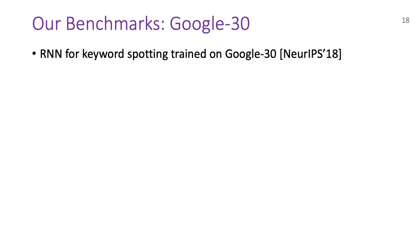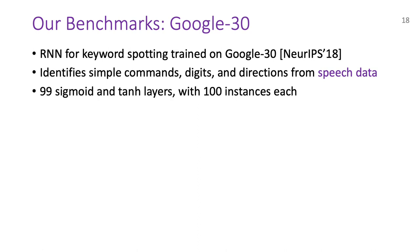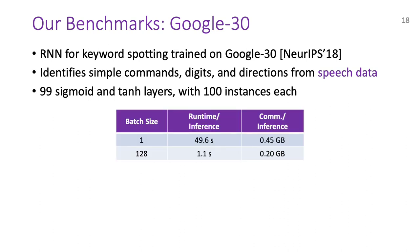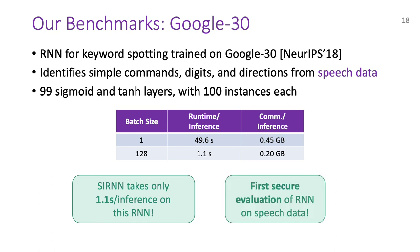First, we have the Google-30 benchmark, which evaluates an RNN for keyword spotting, trained on the Google-30 dataset. It takes speech data as input and identifies simple commands like yes or no, digits, and directions from the speech data. It has 99 layers for both sigmoid and tanh, which have 100 instances each. The table shows that using SIREN, a single inference on this RNN takes around 50 seconds and half a GB of communication. Batched inference, on the other hand, has much better performance as costs are amortized, taking just 1.1 seconds per inference. And as alluded to earlier, this benchmark is the first secure evaluation of RNN on speech data.